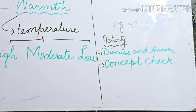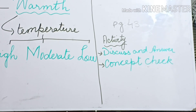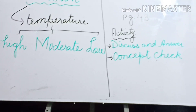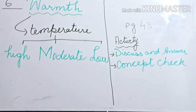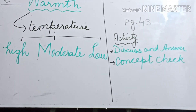To have a clear concept of the characteristics of the environment, there are two activities given on page number 43: 'Discuss and Answer' and 'Concept Check.' You can attempt these activities and see how clearly you have learned this topic. Thank you.